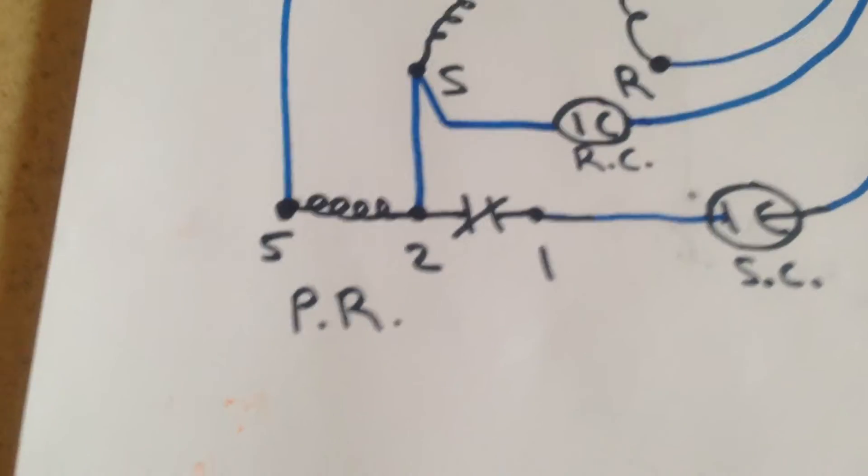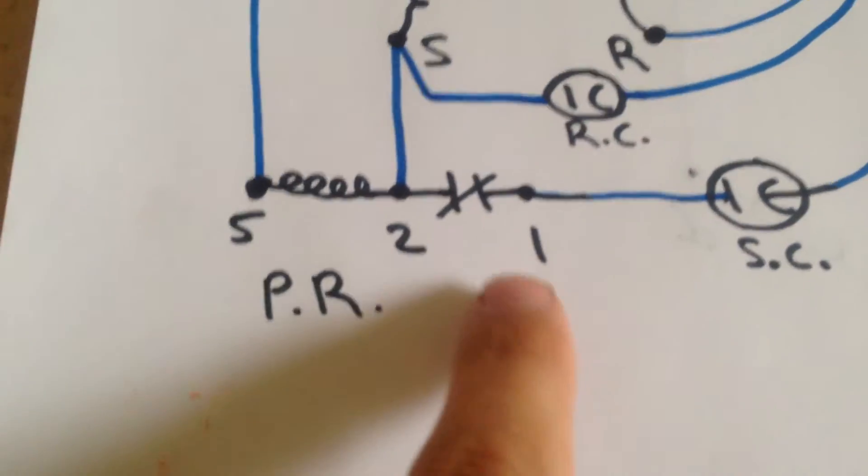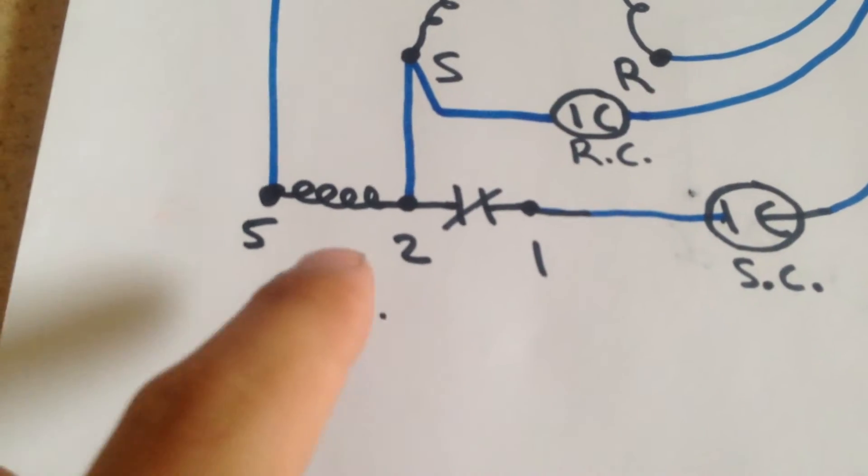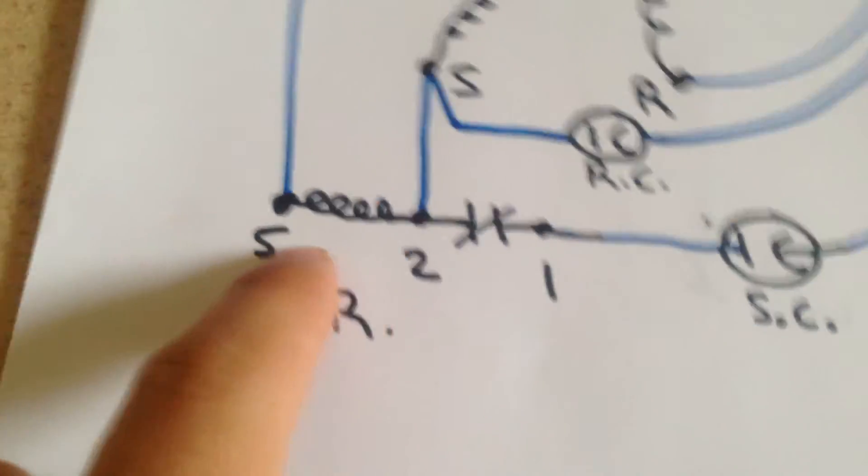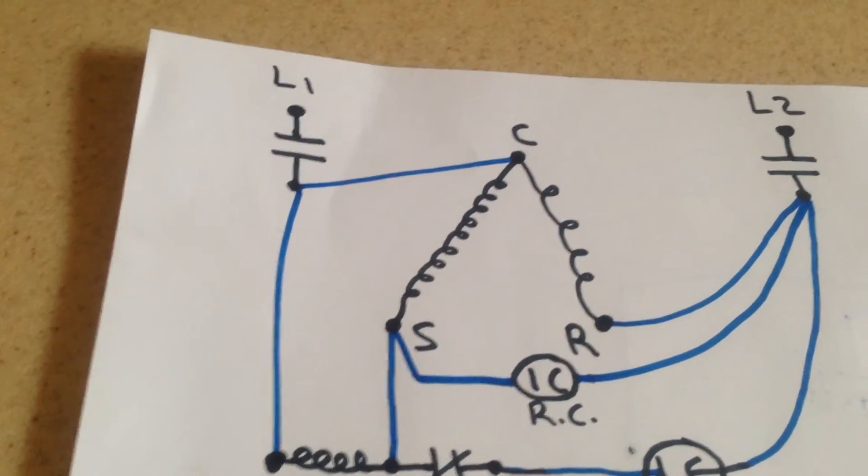So here's our potential relay in its de-energized state. It has a normally closed contact between 2 and 1, and our coil between 5 and 2. And the coil is going to get its voltage across the start winding.